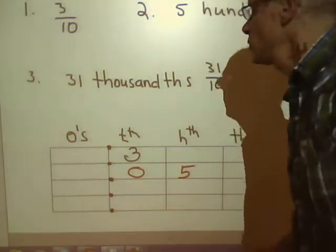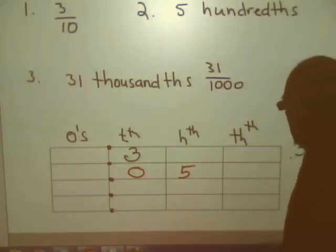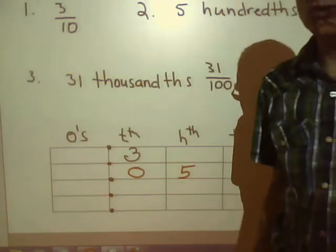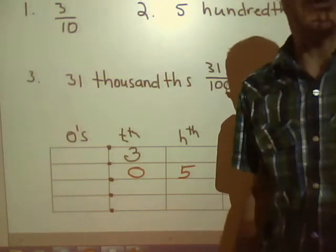Okay, the next question is thirty-one-thousandths. Now this can be a two-step question. Once you see it a couple times, you see how it works.